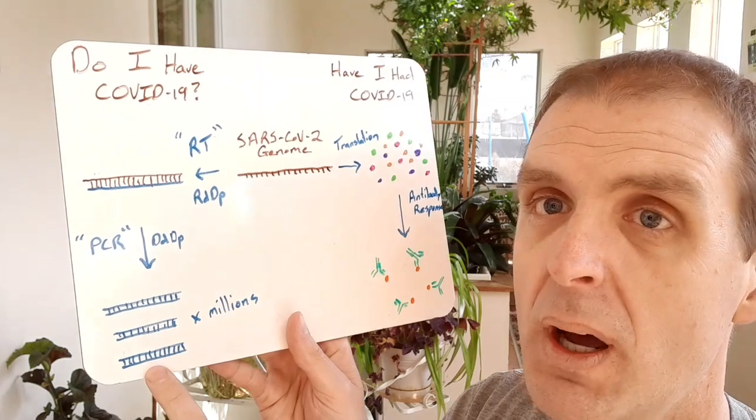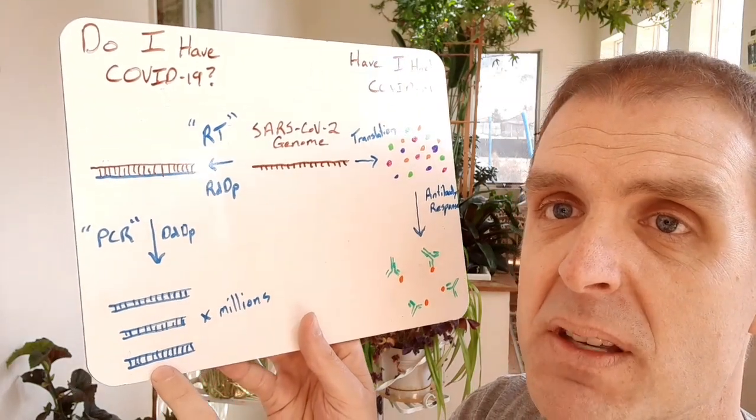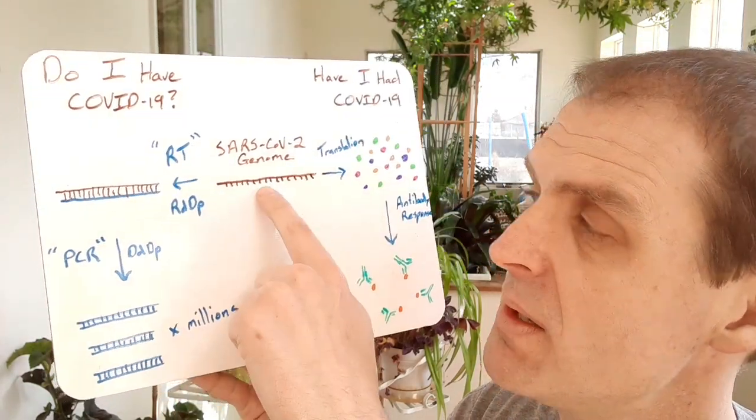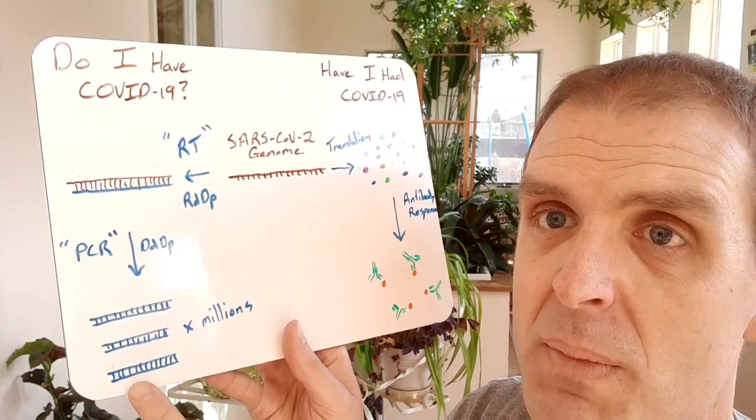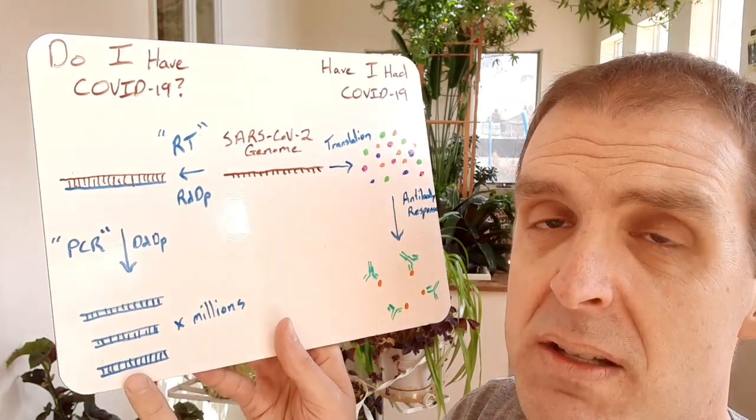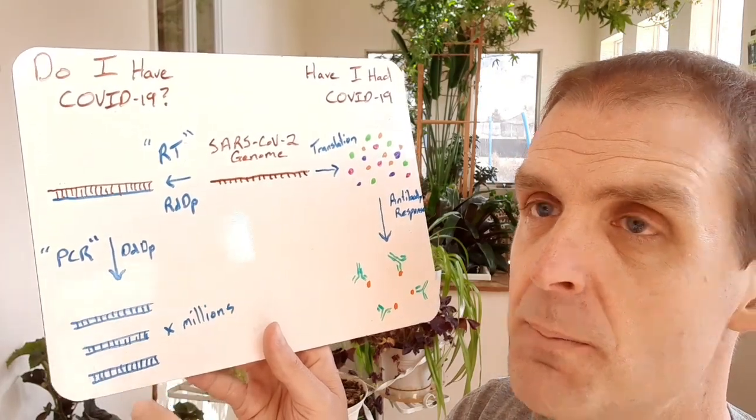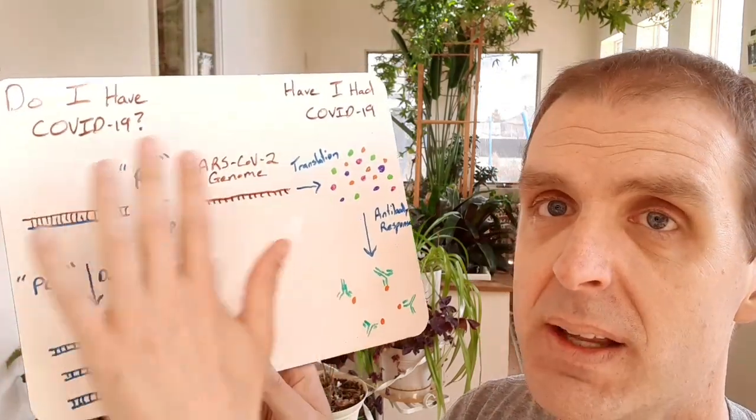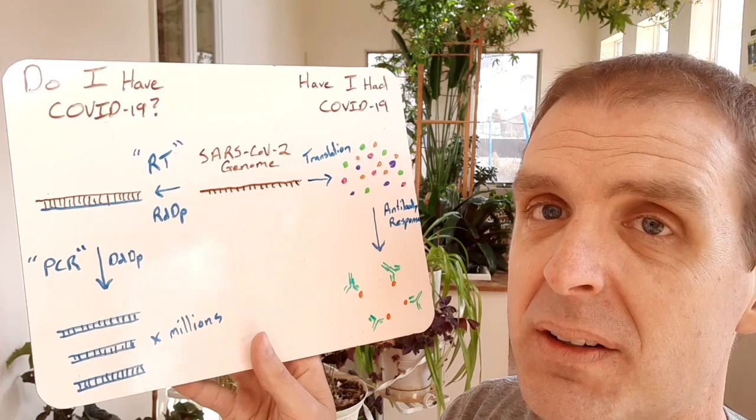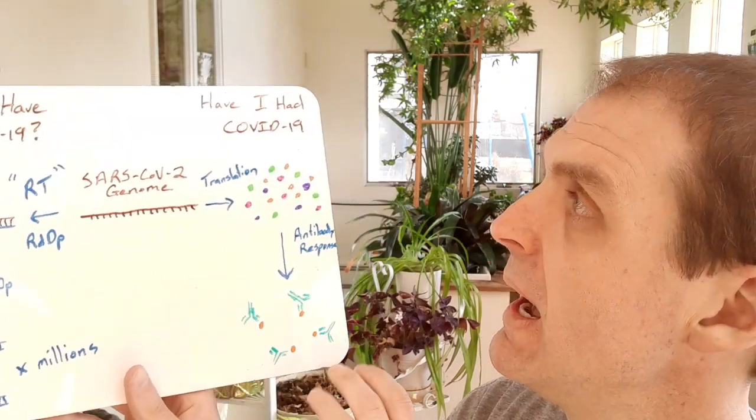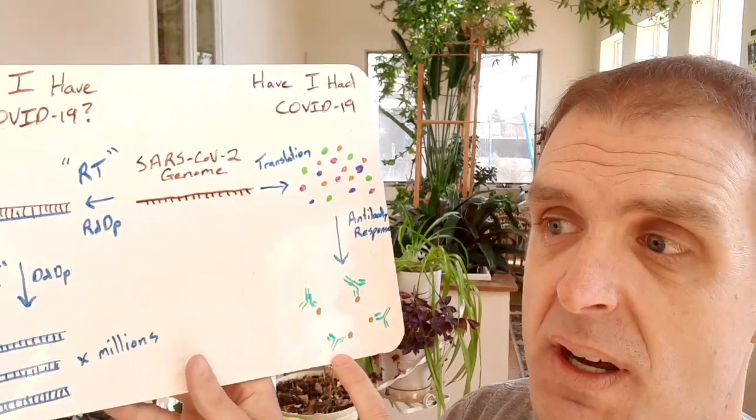When you have lots and lots of copies of the genome in the DNA form, you could use some fluorescence-based mechanisms to detect this. And so that is, do I currently have COVID-19? Have I had COVID-19 is going to focus on these antibody proteins, and I'll talk about a couple of assays that can detect that.